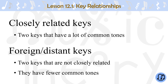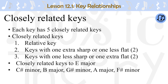Closely related keys are two keys that share many common tones. Foreign or distant keys are any two keys that are not closely related. Distant keys share fewer common tones. Each key has five closely related keys. The keys that are closely related to a given key are the relative key, the two keys that have one extra sharp or one less flat than the given key, and the two keys with one less sharp or one extra flat than the given key.